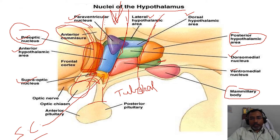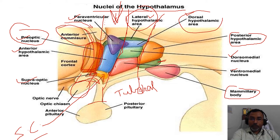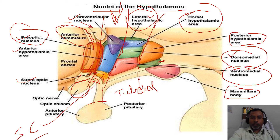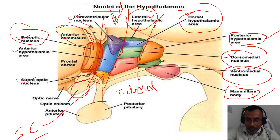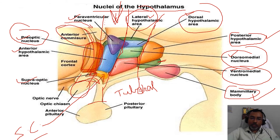In the tuberal region, the nuclei are the lateral hypothalamic nucleus, the dorsal hypothalamic nucleus, the dorsomedial hypothalamic nucleus, and the ventromedial hypothalamic nucleus. The posteriormost region is also called the mammillary region, which contains the mammillary body. There is also the posterior hypothalamic nucleus. The mammillary body has medial and lateral intercalated nuclei.